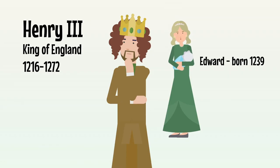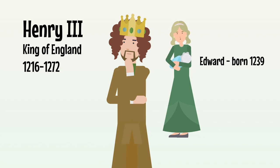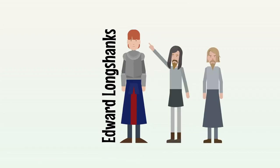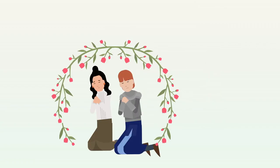Edward was born in 1239. At that point, his father Henry III had been king for 23 years. If this seems like a long time, bear in mind Henry had been crowned when he was just nine. A powerful, well-built fellow at six foot two, Edward was nicknamed Edward Longshanks, a reference to his long legs. When he was 15, his father married him off to Eleanor of Castile, and he would have 15 children with her, nine of which tragically died in childhood.